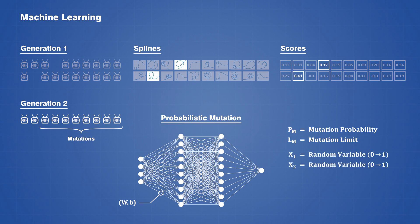Two random variables are then generated for every weight and bias within the network, where the first one determines whether a mutation will occur, and the second one determines the magnitude. By adjusting the mutation probability and limit, we can control how fast or slow we want the bots to evolve between generations, and to what extent.